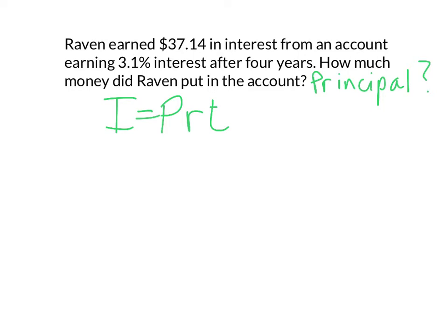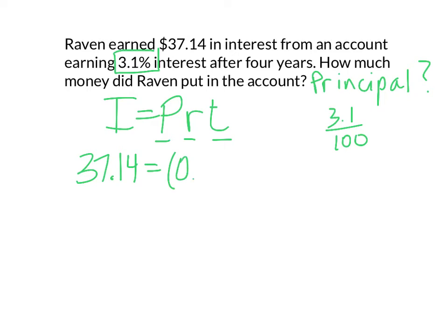I'll always write it out generically first so I make sure I get my numbers in the right spots. A lot of times people just start plugging in the numbers in place of the P, the R, and the T, even if they don't belong there. This time the interest is what we have, so I replace the I with 37.14. The principal is what I don't know — I like to put the variable at the end. The rate, you have to divide by 100, so 3.1 over 100. On a calculator, divide 3.1 by 100 to get 0.031, times the time, four years. And I put the variable at the end.